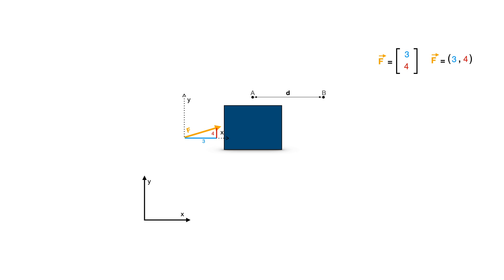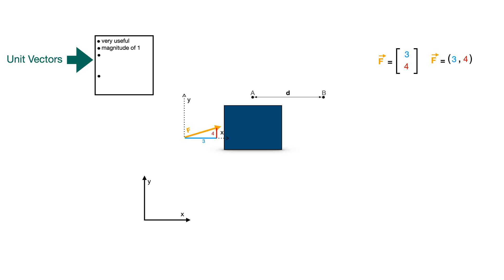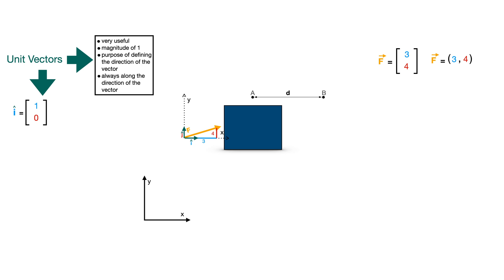To indicate the direction of these components along the axes, we use the concept of unit vectors, which are used extensively in engineering calculations. Unit vectors, as the name suggests, have a magnitude of one and are used for defining the direction of a vector. The unit vector along the x-axis is in the horizontal direction with magnitude one and is written as i-hat. The unit vector along the y-axis is written as j-hat. The vector notation of i-hat is (1, 0) and j-hat is (0, 1).